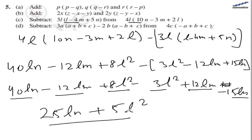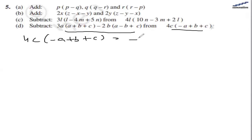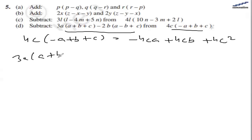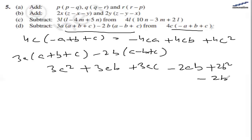For part b, we are subtracting one expression from another. The first expression is 4c(a plus b plus c), which expands to minus 4ca plus 4cb plus 4c². The second expression is 3a(a plus b plus c) minus 2b(a minus b plus c), which gives 3a² plus 3ab plus 3ac minus 2ab plus 2b² minus 2bc.